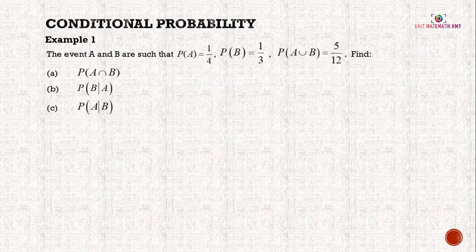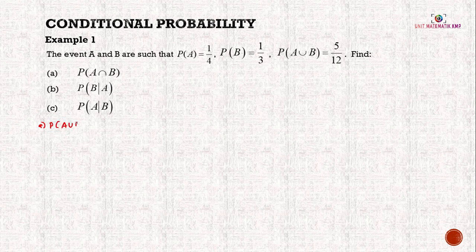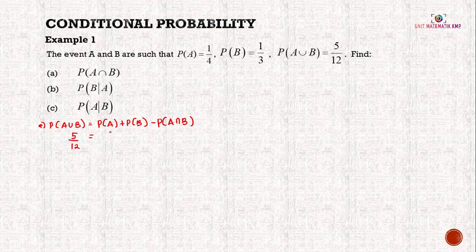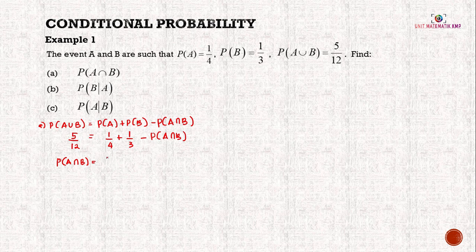Example 1: Events A and B are such that P(A) = 1/4, P(B) = 1/3, and P(A∪B) = 5/12. We need to find P(A∩B). Using the addition probability rule: P(A∪B) = P(A) + P(B) − P(A∩B), so 5/12 = 1/4 + 1/3 − P(A∩B). Rearranging, P(A∩B) = 5/12 − 1/4 − 1/3 = 1/6.